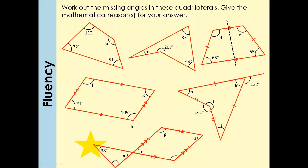For this question we need to know facts about a parallelogram. In a parallelogram, adjacent angles are supplementary — they add up to 180°. So if one angle is 109°, the adjacent angle is 180° − 109° = 71°. Similarly, if one angle is 81°, the adjacent angle is 180° − 81° = 99°.